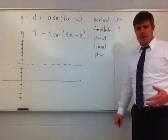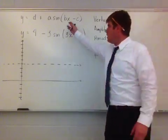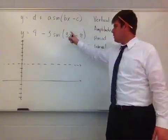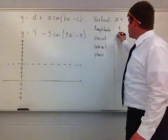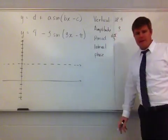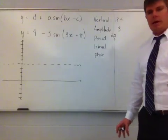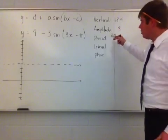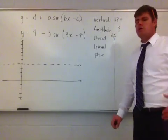Next is the period. The period is 2π divided by b, where b is the coefficient of x. Looking at the function, b is 3, so I take 2π divided by 3. I put this in simplest form if it's not — 2π over 3 is already in simplest form because 2 over 3 can't be reduced, so I leave it as a fraction.